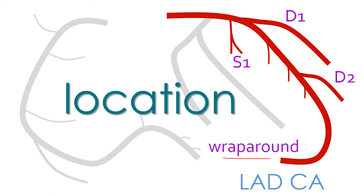The first septal branch usually originates before the first diagonal branch, but there are variations of this pattern. There are also anatomic variations as to the septal circulation itself. Sometimes there is a small proximal septal branch and a second large septal system that is the one supplying blood not only to a significant mass of the septal myocardium but also to the conduction system. We will see examples of this in coming videos.